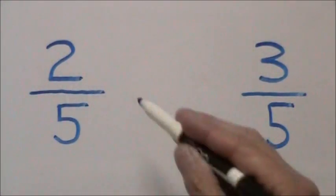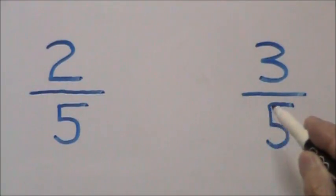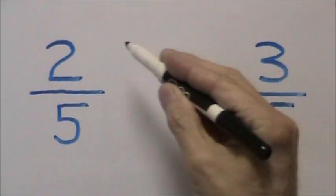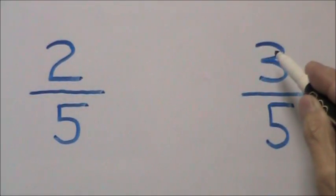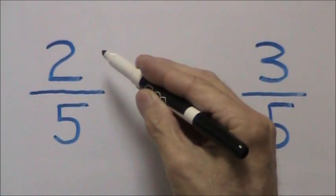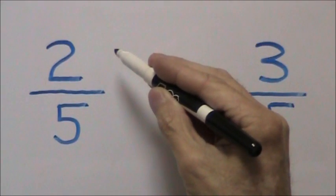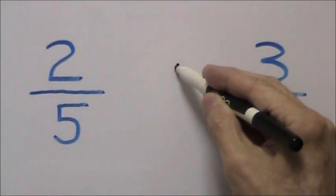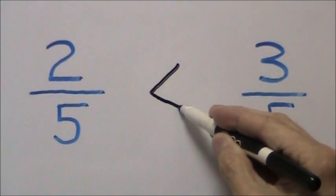When we're comparing two fractions with like denominators, all we have to do is look at our numerators and the fraction with the lowest numerator will have the least value. Therefore, two-fifths is less than three-fifths.